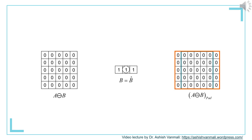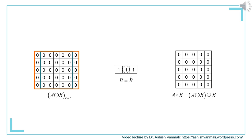In the second step, we dilate the erosion result (all zeros) with B. We pad the zeros with respect to B-cap — since B equals B-cap, we pad one column on left and right. However, since the erosion result is all zeros, there cannot be any overlap with B-cap. Hence the output of the opening operation is also all zero values.